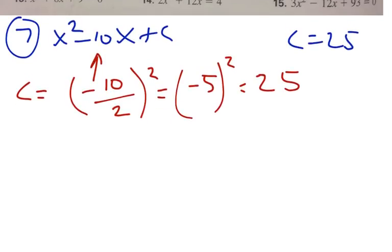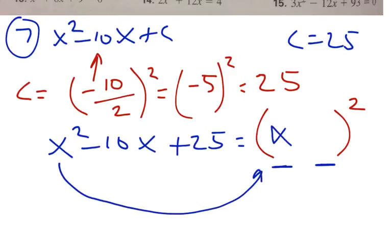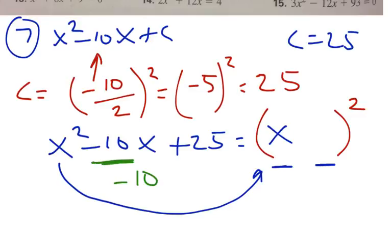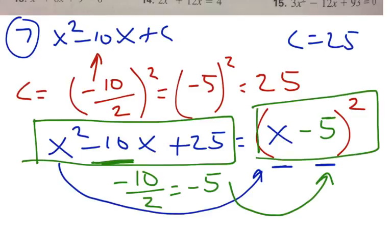The direction says find the value of C that makes the expression a perfect square trinomial. In this case, it's x squared minus 10x plus 25. Then write the expression as a square of a binomial — two terms. The first term is x. The second term is half of negative 10, which is negative 5. So you have x squared minus 10x plus 25, and the square of a binomial is x minus 5 to the second power. That's your answer.